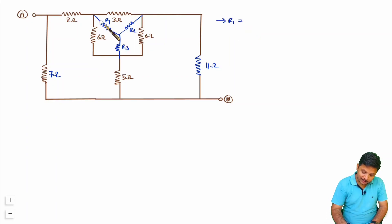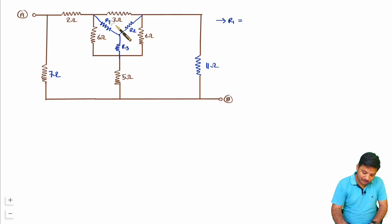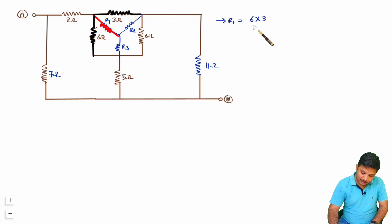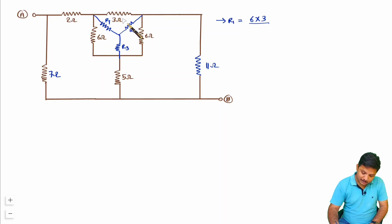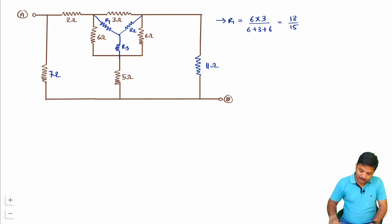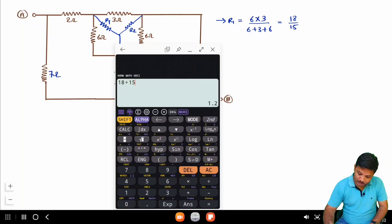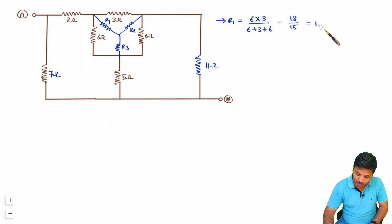When you want to calculate the value of R1 from delta, all you need to do is multiply the adjacent resistors of R1. Those are 6 and 3 over here. So I am multiplying 6 into 3, divided by the sum of all 3 resistors, that is 6 plus 3 plus 6. So this is 18 divided by 15, which equals 1.2 ohm.